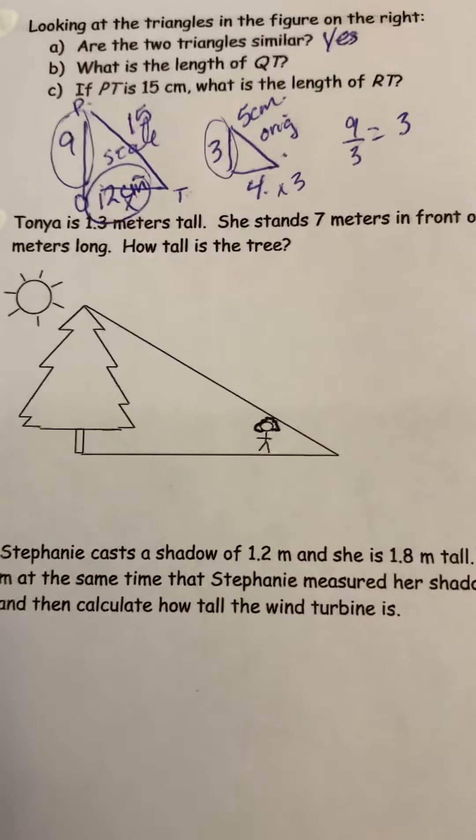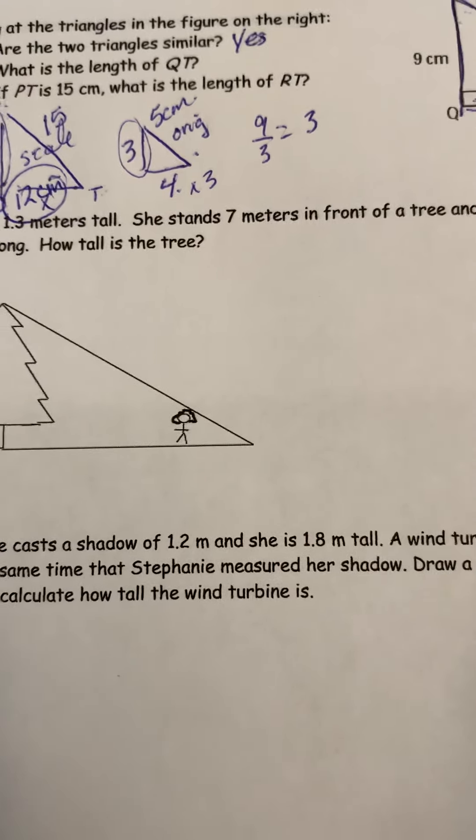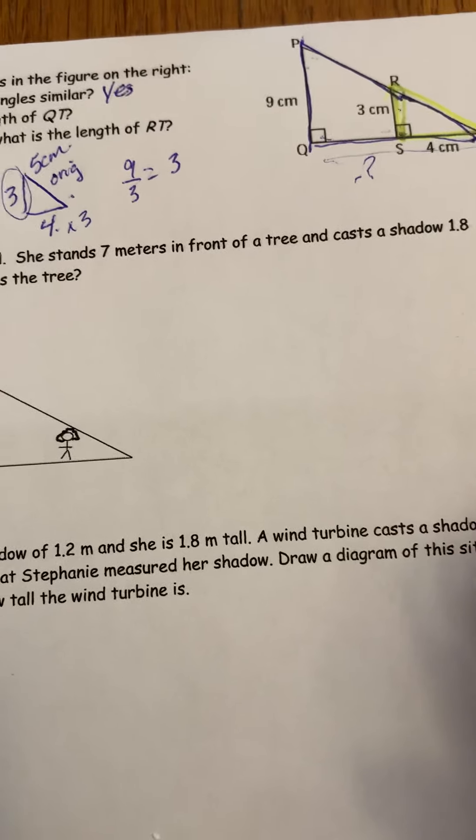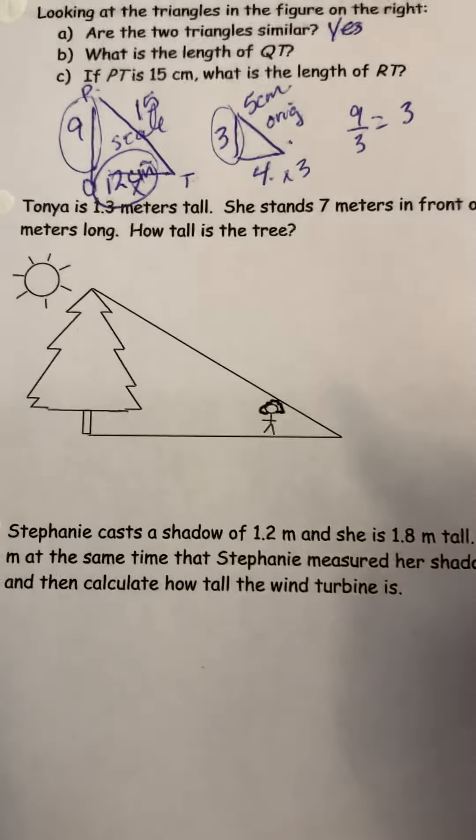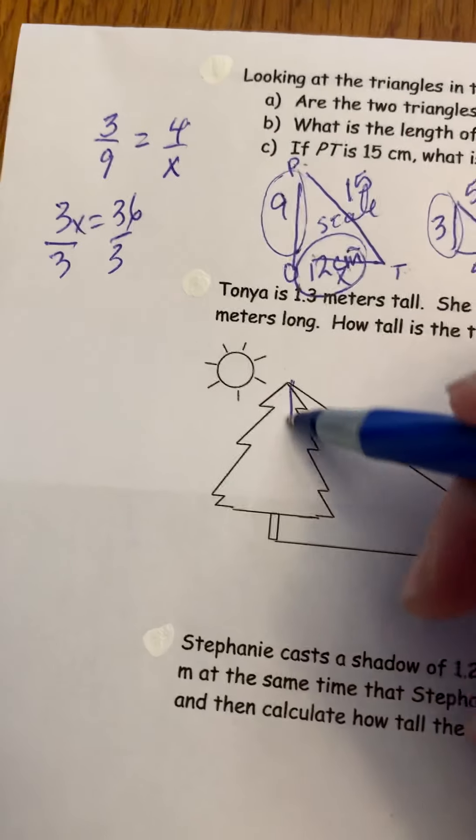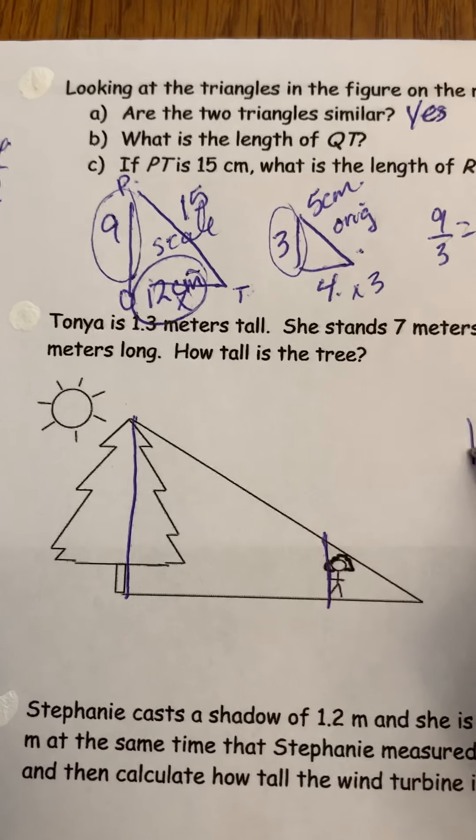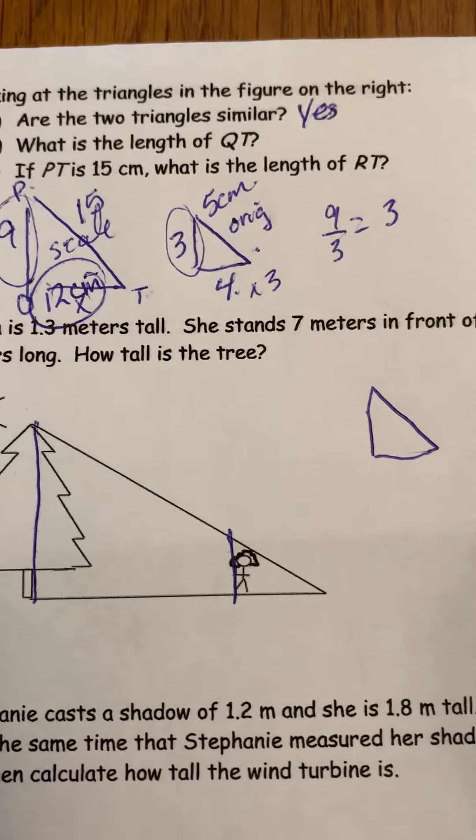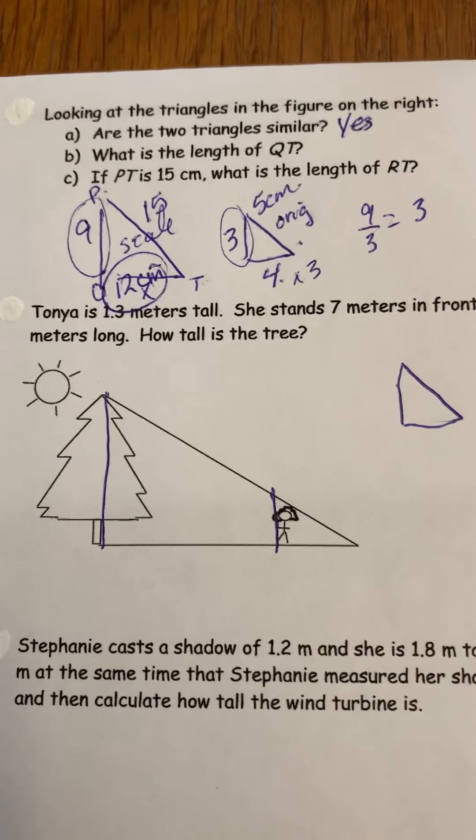Okay, so now this one looks a little weirder because Tanya is 1.3 meters tall and she stands seven meters in front of a tree and casts a shadow one and a tenth of a meter long. How tall is the tree? Okay, so I'm just going to do what we did up here and draw that we have two triangles. You don't really see them because it's tree and a human, but we've got little triangle, and then I'm going to draw the big triangle over here, and I'm sorry that I'm so sloppy here.